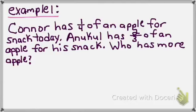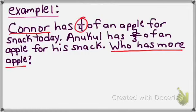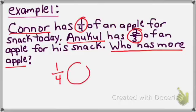Let's take a look at example number one. Connor has one-fourth of an apple for snack today. Anacle has two-thirds of an apple for his snack. Who has more apple? As with any word problem, let's see exactly what they want to know. My question is: who has more apple? Connor has one-fourth of an apple, and Anacle has two-thirds. I'm going to rewrite this as one-fourth with a comparison circle, two-thirds, putting a C under one-fourth for Connor and an A under two-thirds for Anacle so I know who's who.